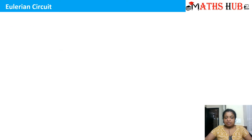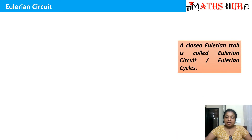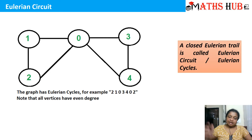Now let's talk about an Eulerian circuit. The difference between a trail and a circuit is that a trail is open while a circuit is always closed. So a closed Eulerian trail is also called an Eulerian circuit or an Eulerian cycle.